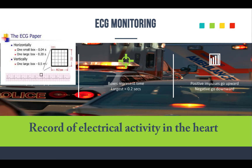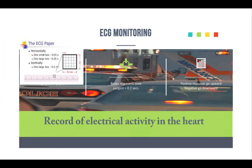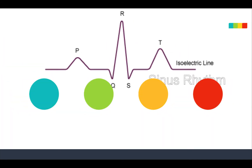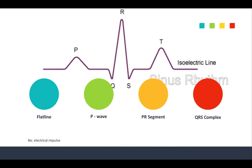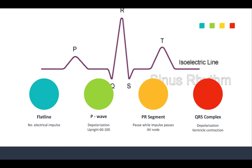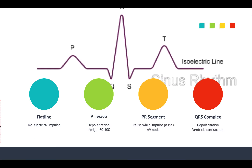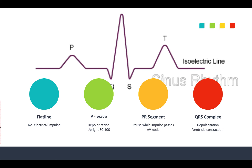You get your positive impulses that go upward and your negative impulses that go downward. Flat line is pretty much your isoelectric line, and that gets produced if there's no electrical impulse present.